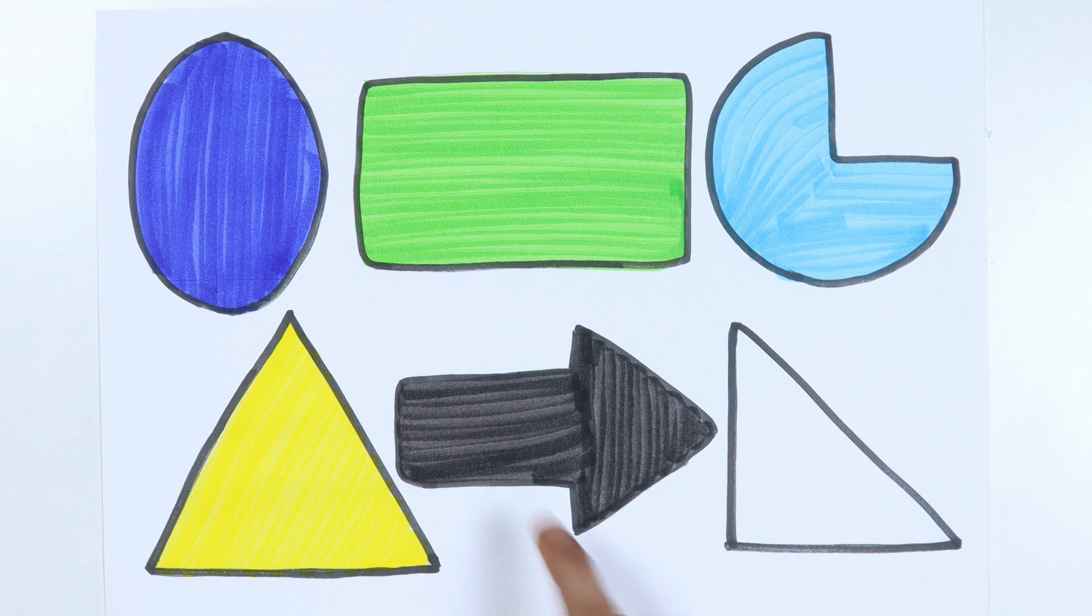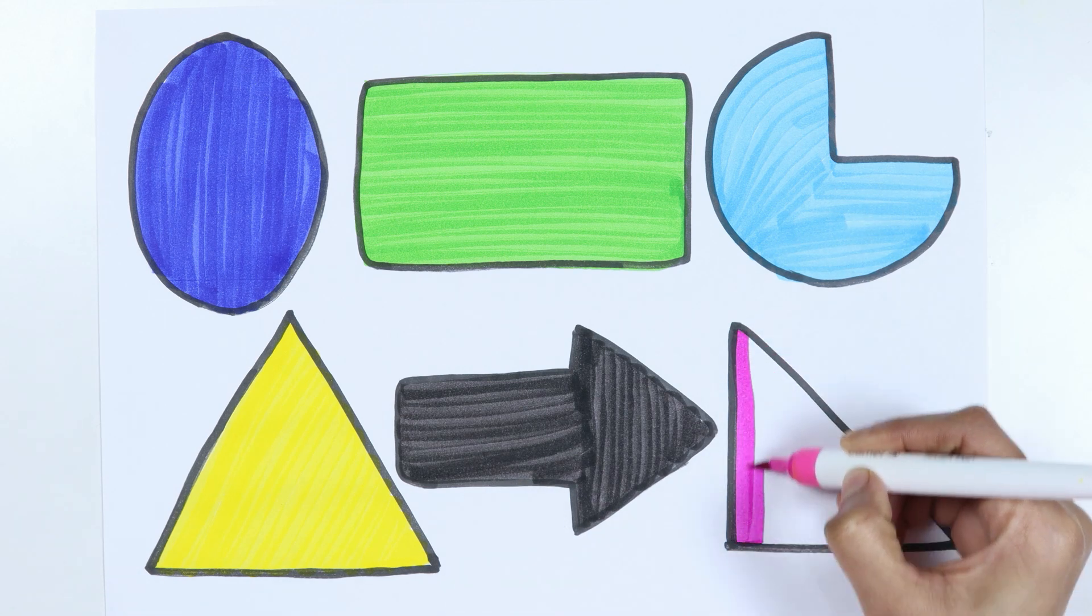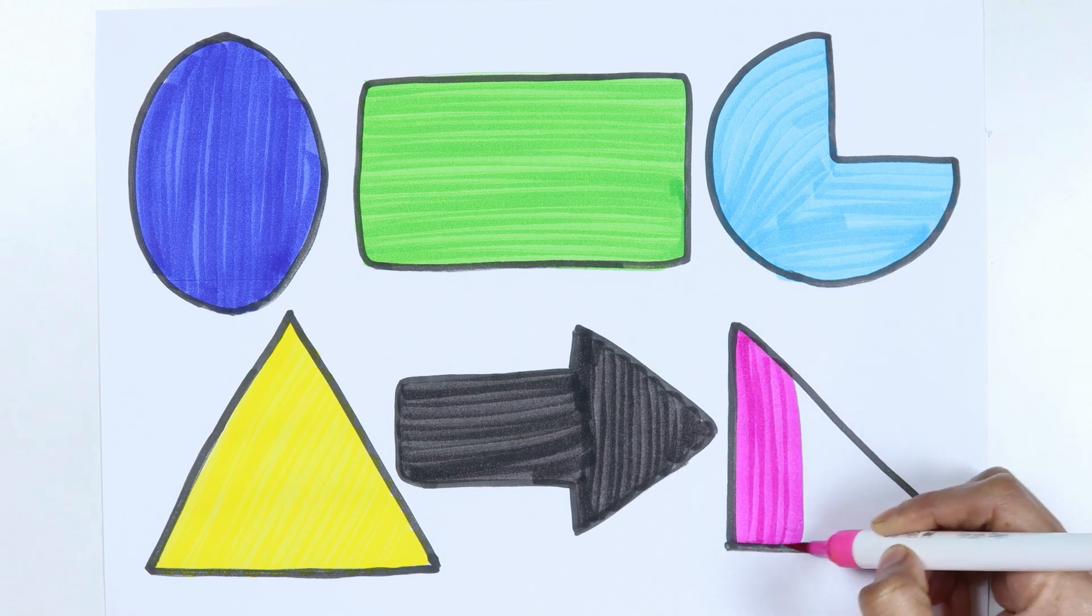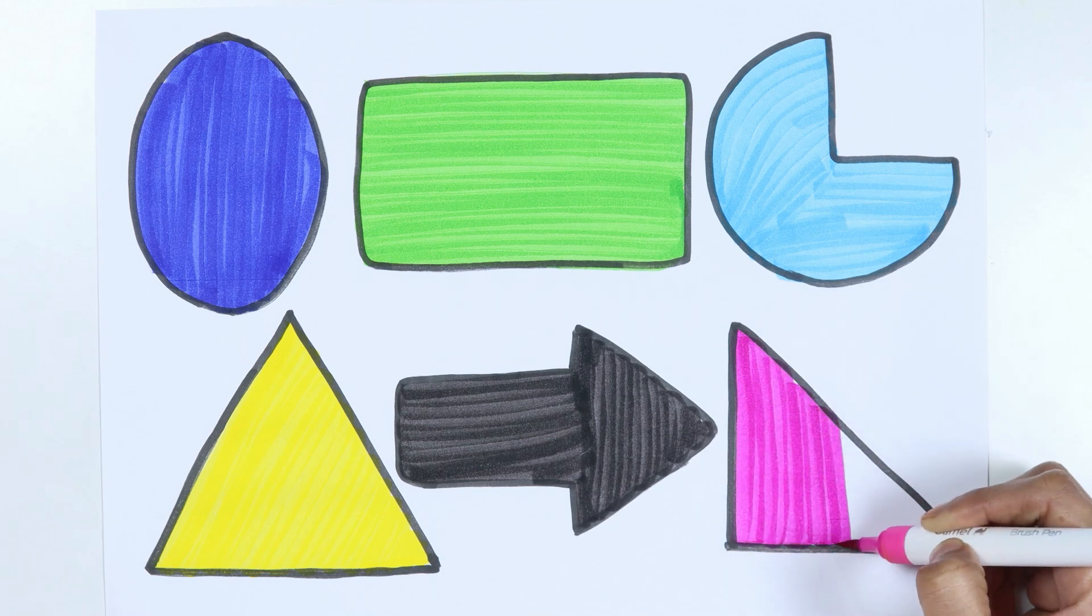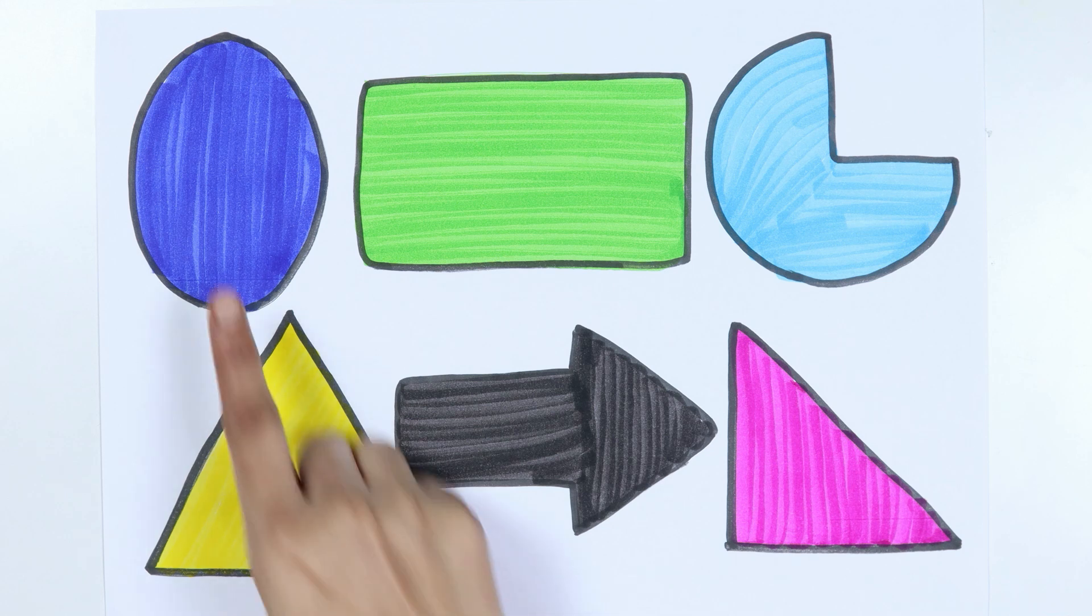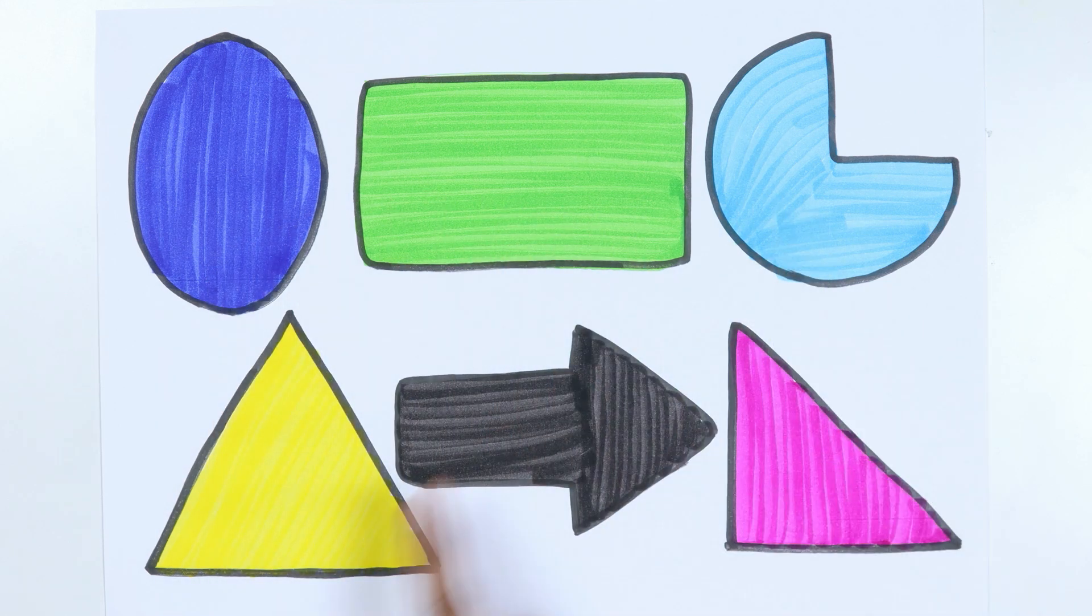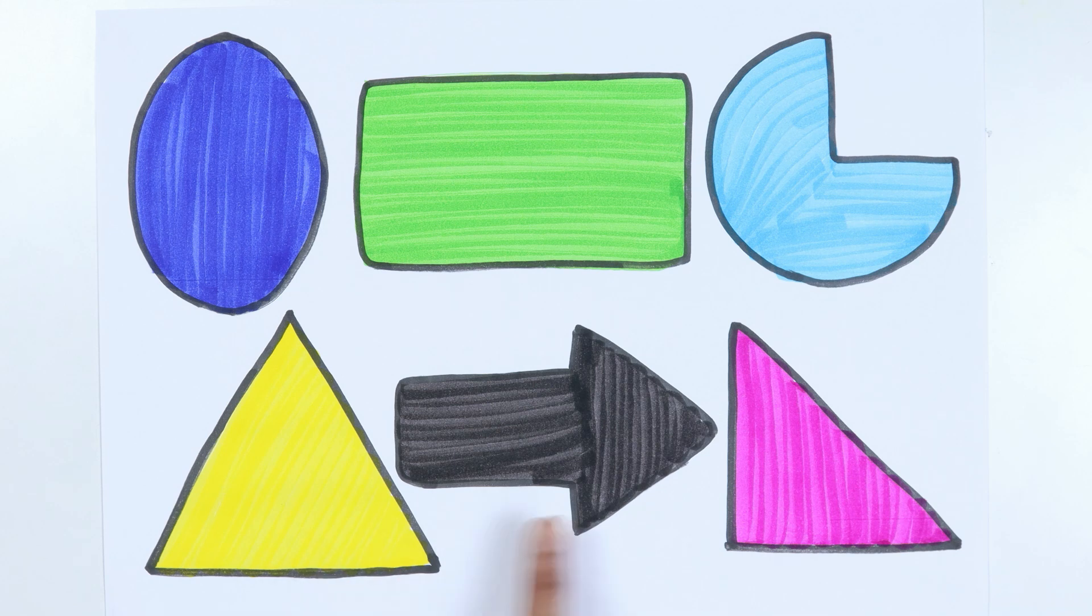Arrow, pink color. Right triangle, ellipse, rectangle, pie, triangle, arrow, right triangle.